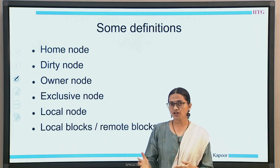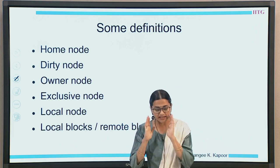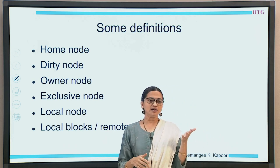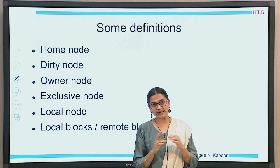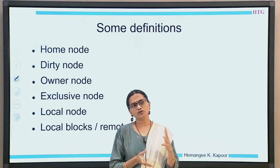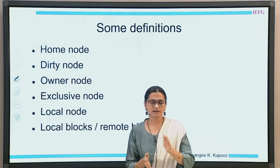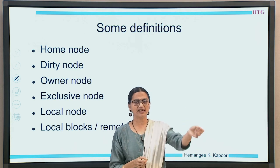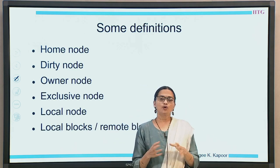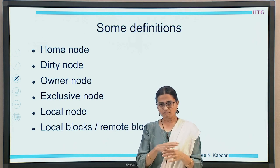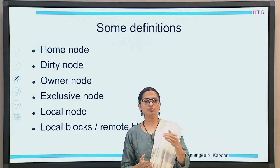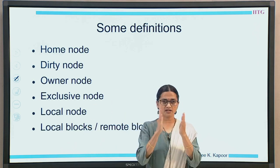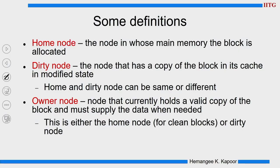Then we have a concept of an owner node. Owner node — as the word says ownership — it has the data and it has to provide the data when asked for. Exclusive node is in addition to the E state which we were discussing. Exclusive says that this is the only copy of the block in the complete system. Local node is the node where the data is available, and remote node refers to all data blocks which come from other nodes. More details we will see one by one.